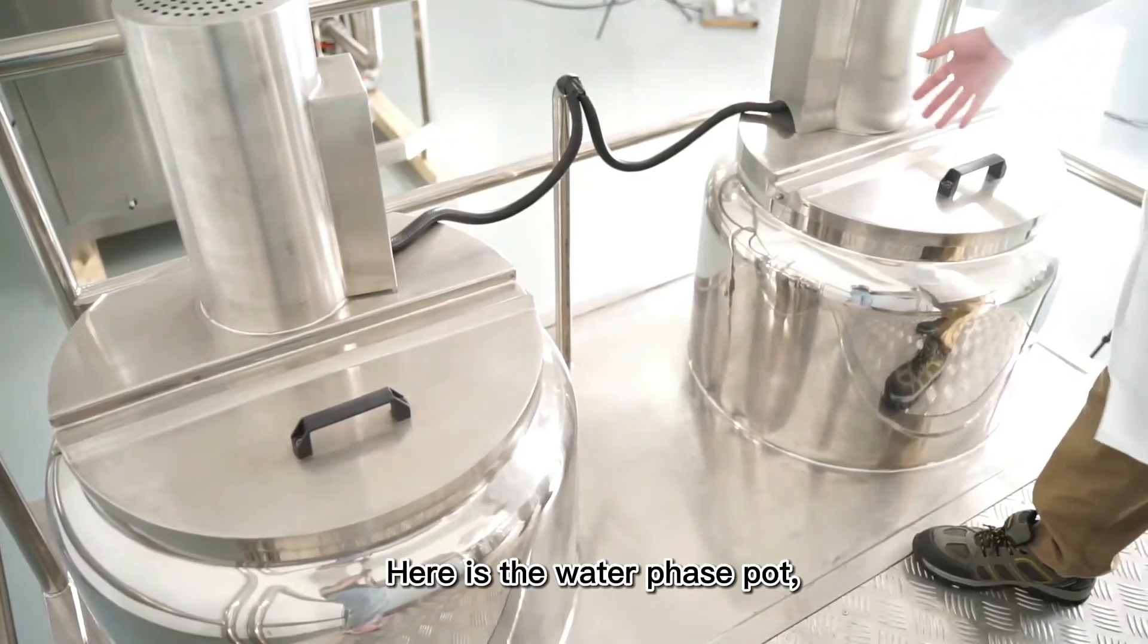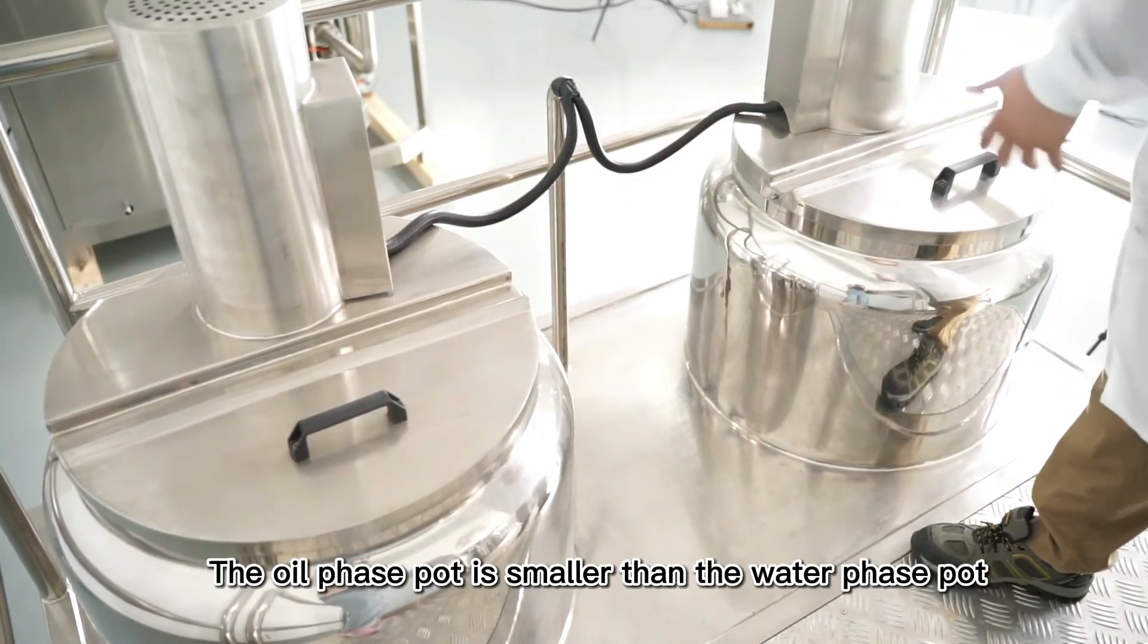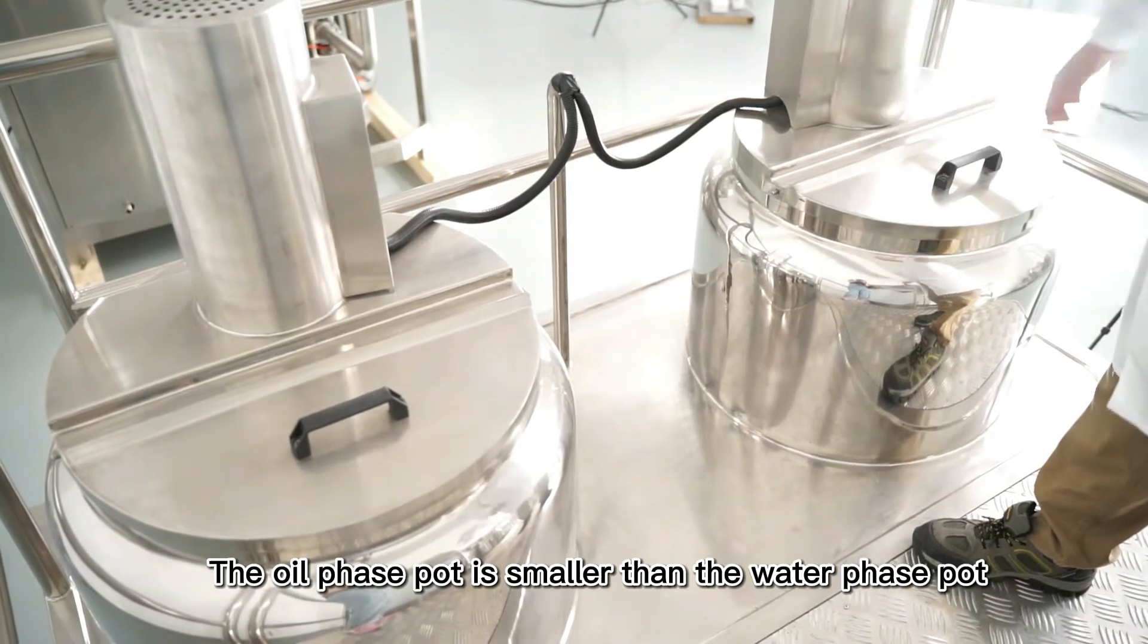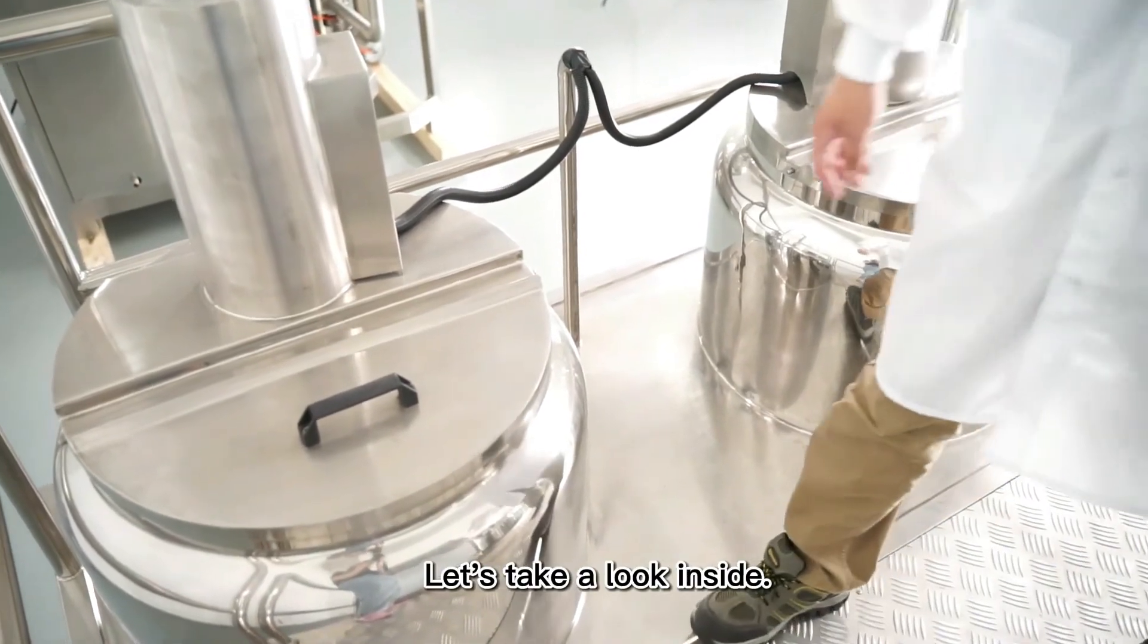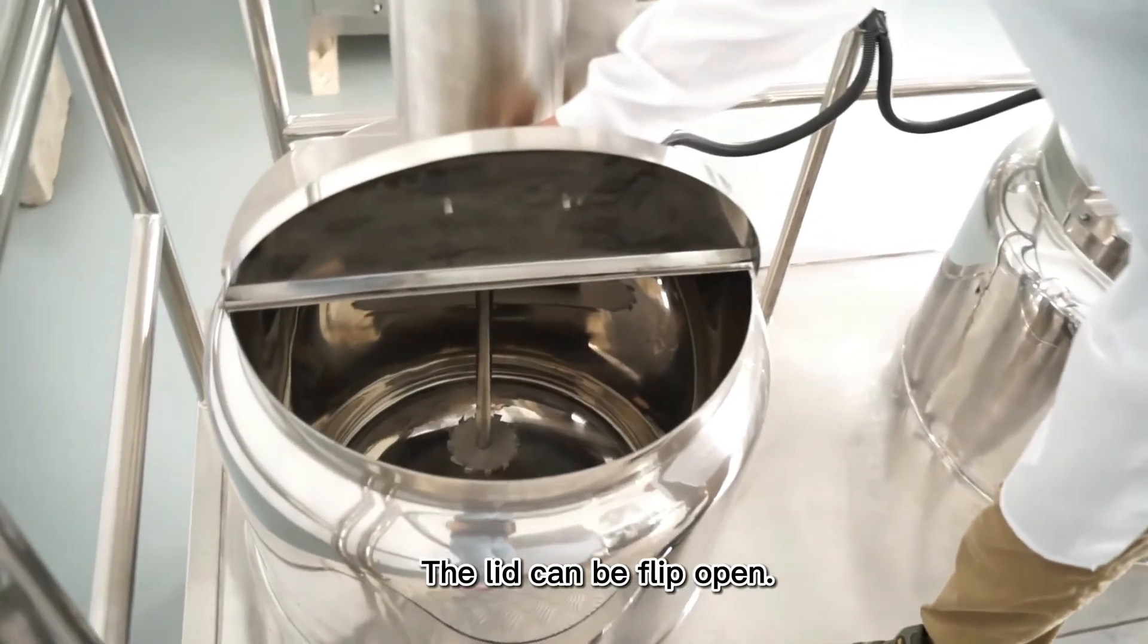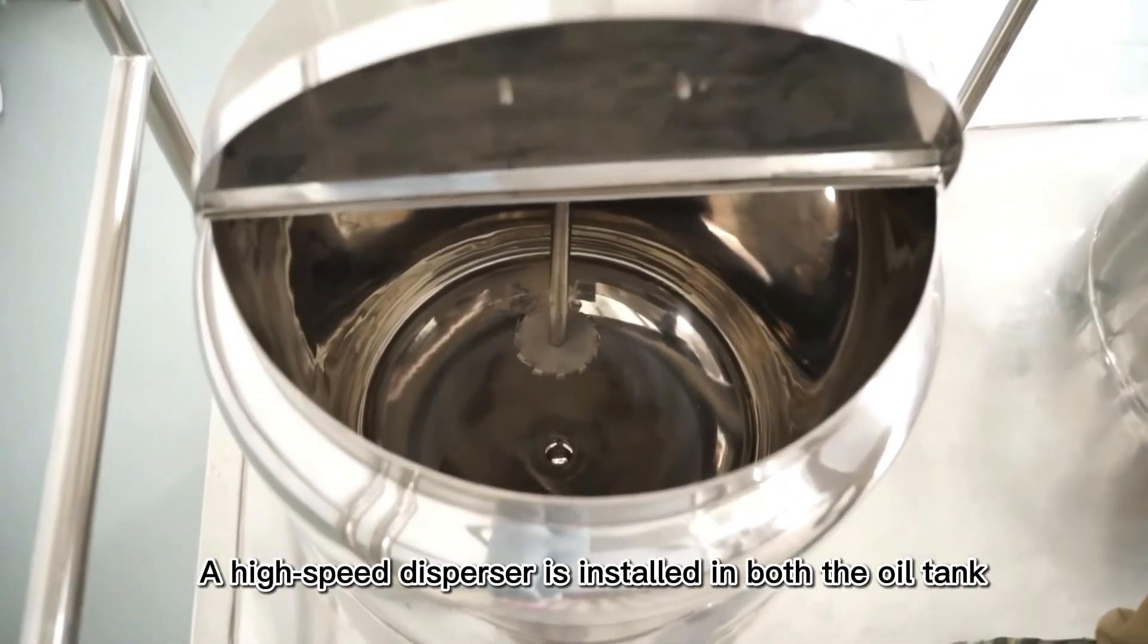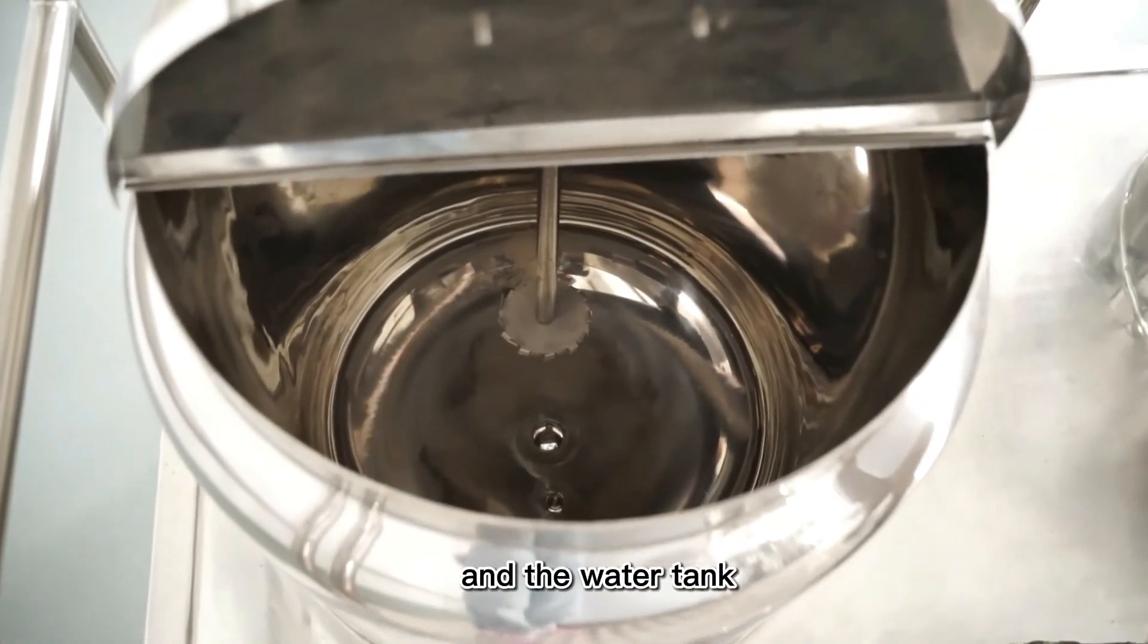Here is the water phase part, and here is the oil phase part. The oil phase part is smaller than the water phase part. Let's take a look inside. The lid can be flip-open. A high-speed disperser is installed in both the oil tank and the water tank.